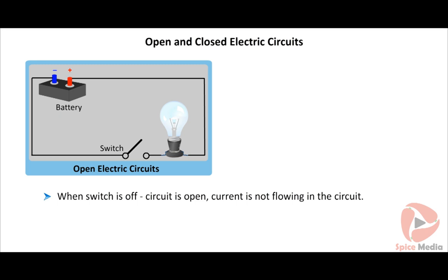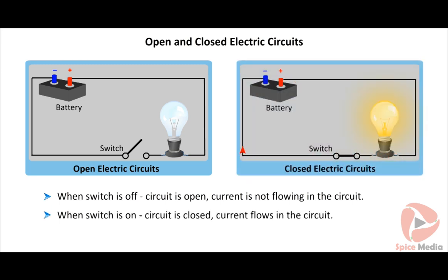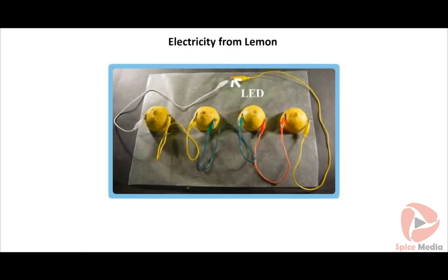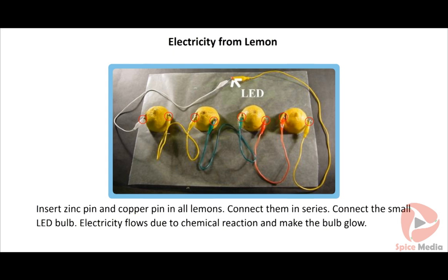In open and closed electric circuits: if the switch is off, the circuit is called an open circuit — no charges flow. When the switch is on, the circuit is a closed circuit and current flows, causing the bulb to glow. We can construct an electric circuit using lemons, copper pins, zinc pins, and an LED bulb. Insert zinc and copper pins in the lemons, connect them in series, then connect the LED bulb. Electricity flows due to chemical reaction and makes the bulb glow.